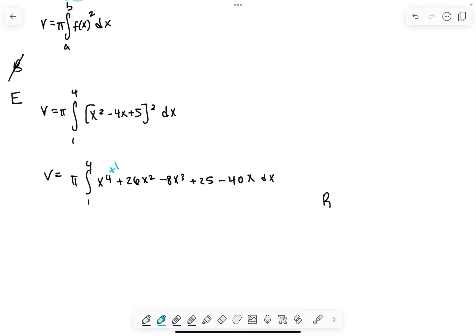I'm simplifying this: x⁴, plus 1 is 5, divide by 5, so (x⁵)/5. Plus 1 is 3, divide by 3, so 26x³/3. Plus 1 is 4, divide by 4, so -2x⁴. If it's just a constant, add the variable: 25x. Plus 1, there's already a 1, so 1 plus 1 is 2, divide by 2, so -20x².